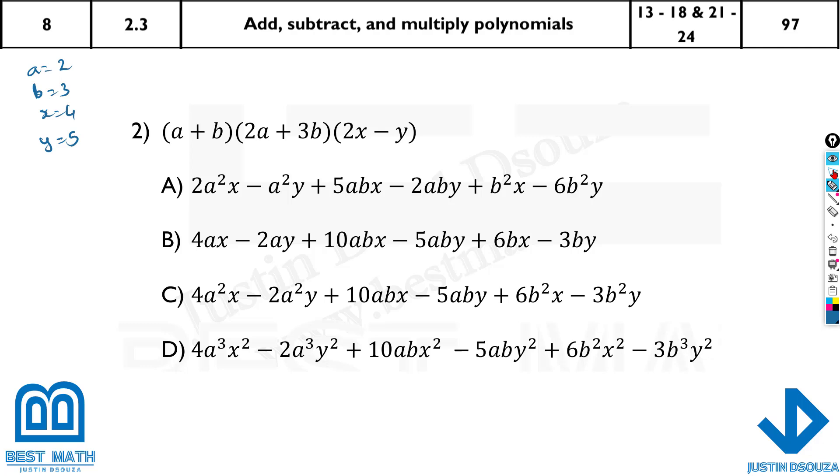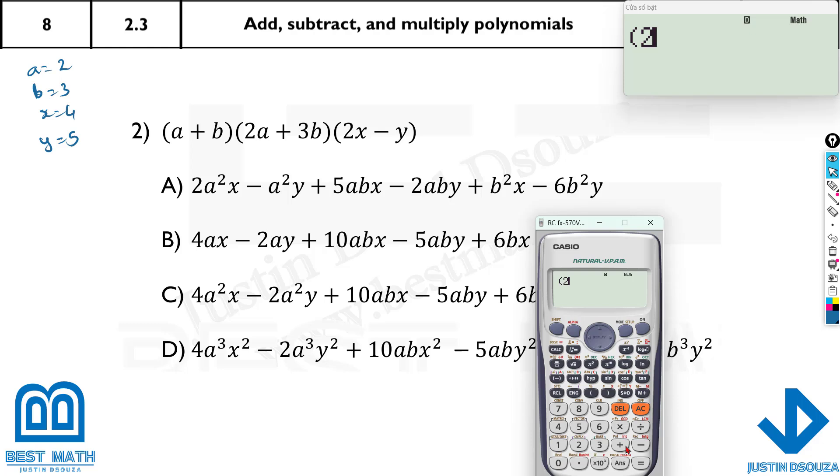Now you need to use your calculator. It depends how quickly you are in your calculator. You need to solve the question and then try which matches the correct answer. First let's write the question out. It's a is 2 plus 3. Open up the bracket. It is 2 times a is 2 again plus 3 times b is 3 and then we have 2 times x that is 4 minus y that is 5. It's 195.